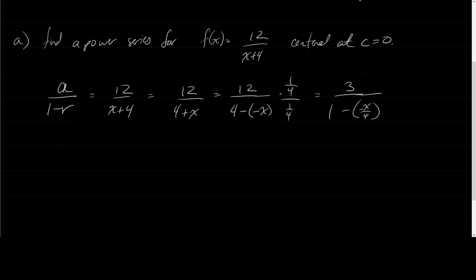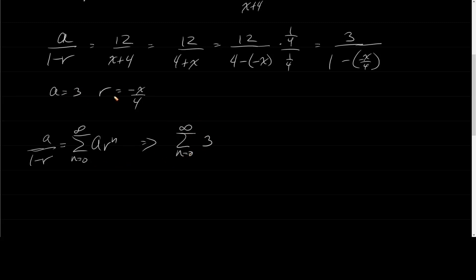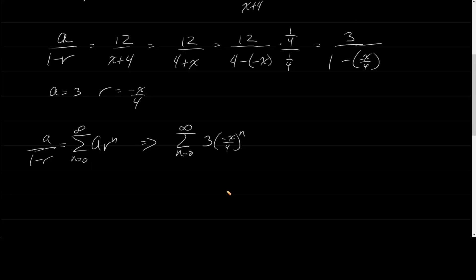Now we've got it in the form we wanted: a equals 3 and r equals negative x over 4. Since we know the geometric power series — a over 1 minus r is the sum from n equals 0 to infinity of a·r to the n — in this case we get the series from n equals 0 to infinity of 3 times negative x over 4 to the n. That's our power series. And yes, this is definitely centered at 0, because I have x minus 0.